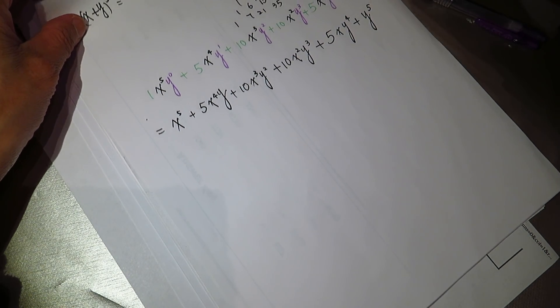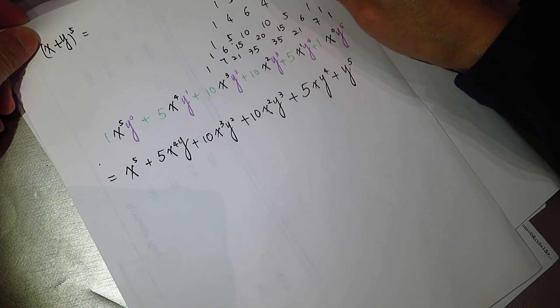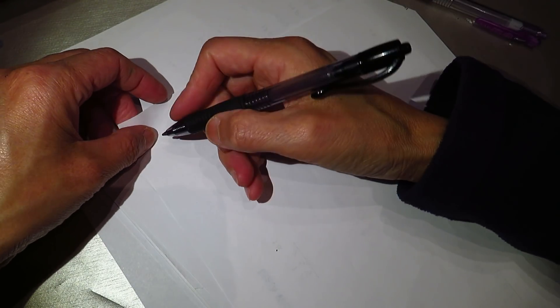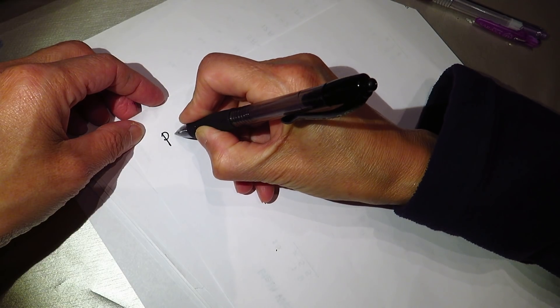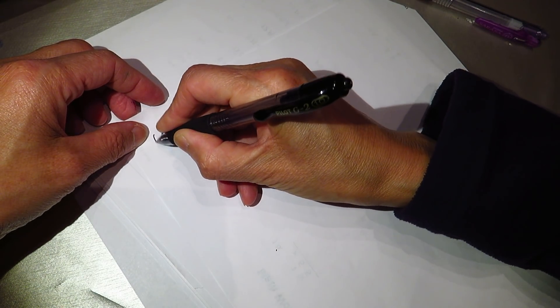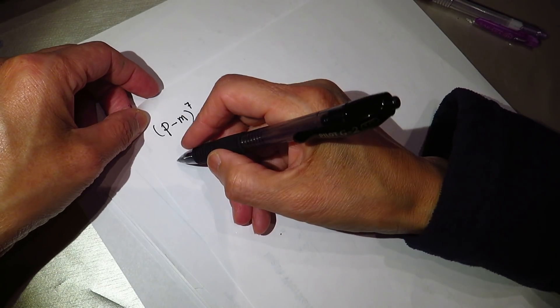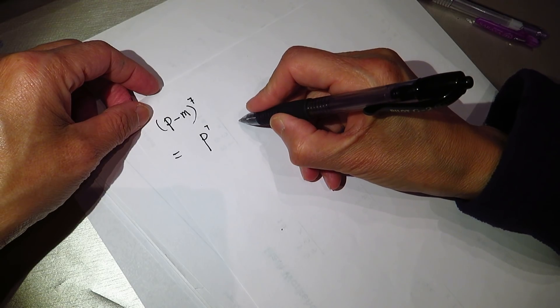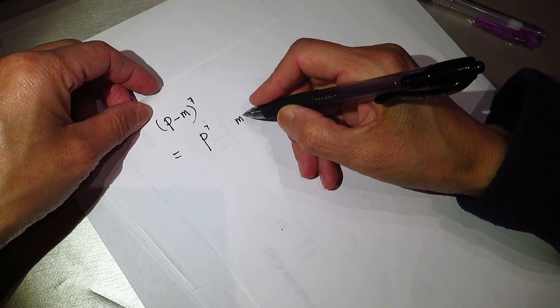That is what we are going to get. I will keep this one, and write in the new piece of paper. P minus M to the power of seven.